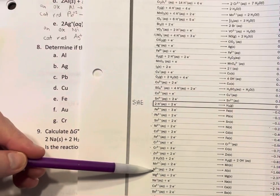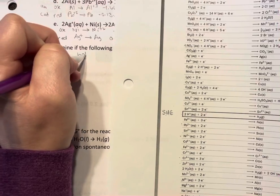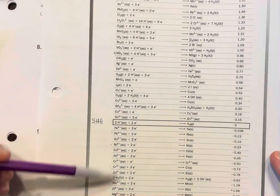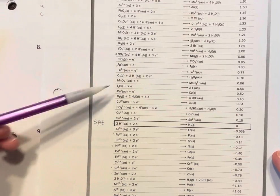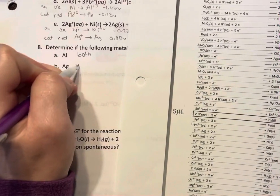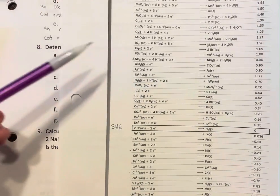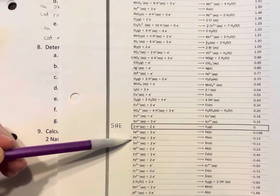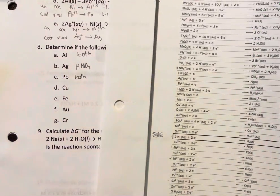So aluminum, aluminum is below HCl so that's going to be both. Silver, silver is above hydrogen but below nitric acid so that's only going to be nitric acid.